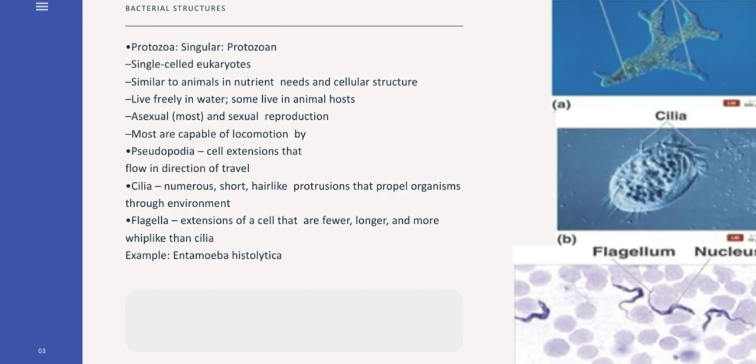Protozoa are microscopic, one-celled organisms that can be free-living or parasitic in nature. They are able to multiply in humans, which contributes to their survival and also permits serious infections to develop from just a single organism. Transmission of a protozoa that live in a human's intestine to another human typically occurs through a fecal-oral route, for example, contaminated food or water or person-to-person contact. Protozoa that live in the blood or tissue of humans are transmitted to other humans by an arthropod vector, for example, through the bite of a mosquito or a sandfly.